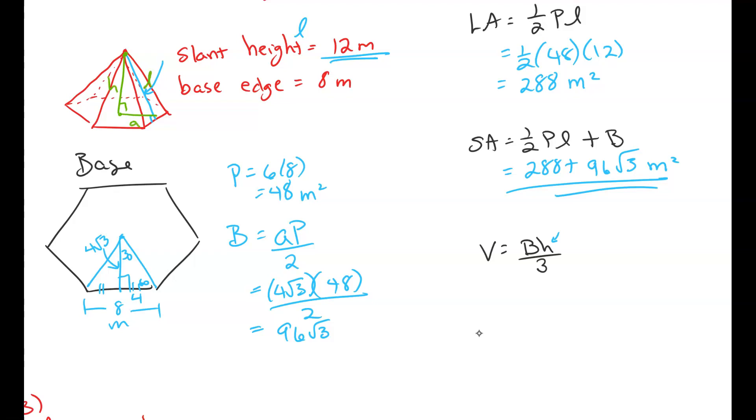So we need to remember that our apothem, our slant height, and the height always form a right triangle. So remember we found the apothem to be 4 root 3. We know the slant height is 12. Can't we use the Pythagorean theorem to solve for what's missing? And the answer is no. So our height squared plus 4 root 3 squared equals our slant height squared which is 12 squared.